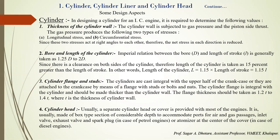Third design aspect: cylinder flange and studs. The cylinders are cast integrally with the upper half of the crankcase, or attached to the crankcase by means of a flange with studs, bolts, and nuts. The cylinder flange is integral with the cylinder and should be made thicker than the cylinder wall — the flange thickness should be taken as 1.2 to 1.4 times the thickness of the cylinder wall.